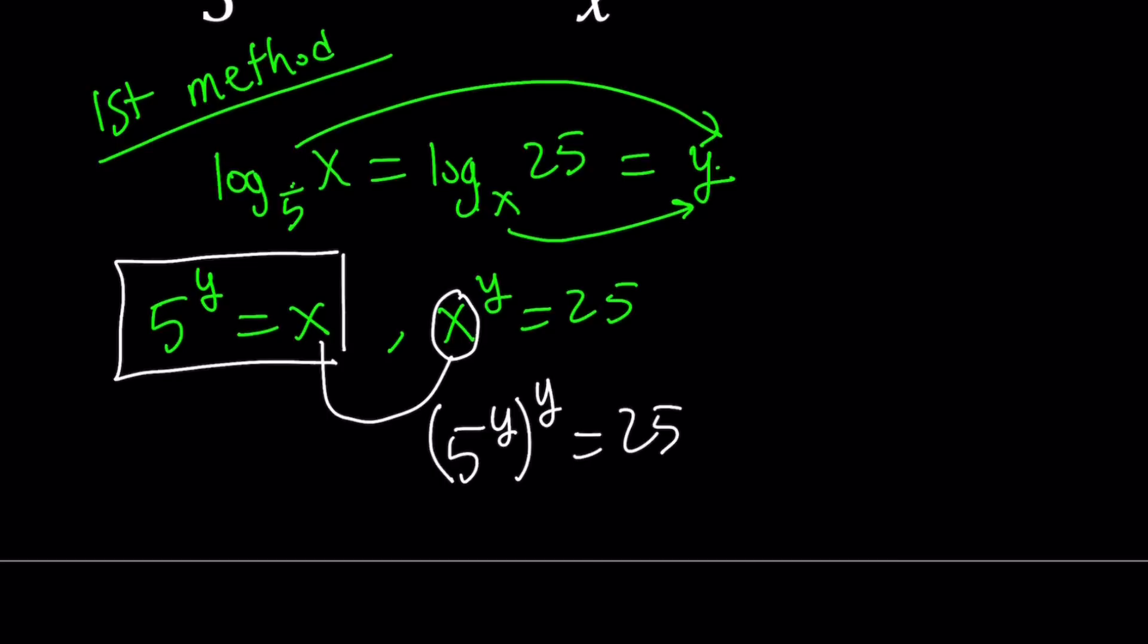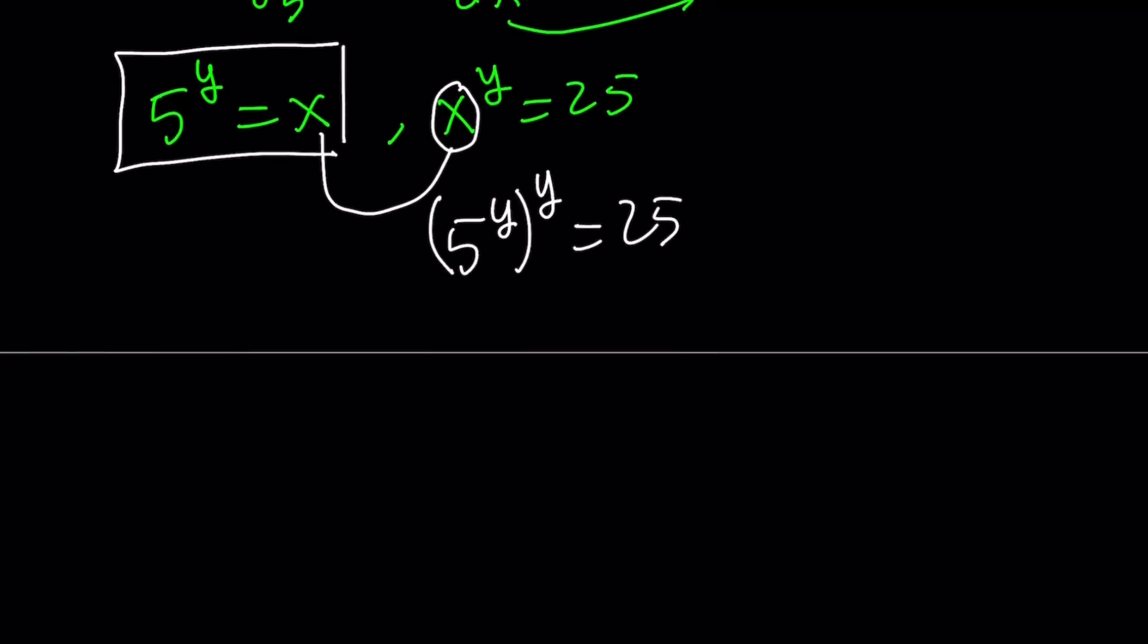And the rest is easy. y times y is y squared, so we can write this as 5 to the power y squared equals 25. But 25 can be written as 5 to the second power. So now we have an equality and the bases are equal. What is that supposed to mean? It means the exponents are equal. So we have y squared equals 2. But y squared equals 2 gives you two solutions: y equals square root of 2 and y equals negative square root of 2. But we're not looking for y, we're looking for x.